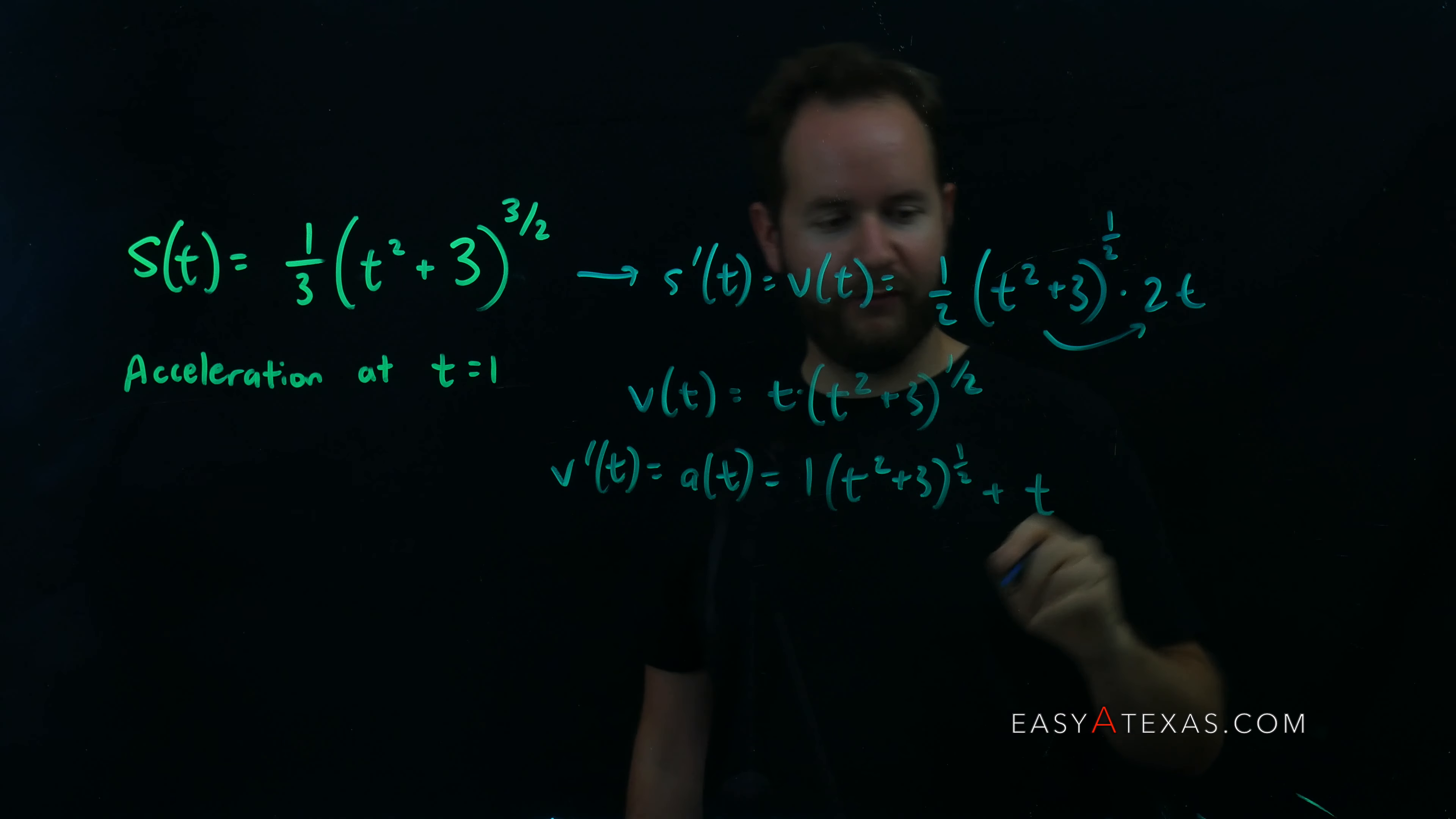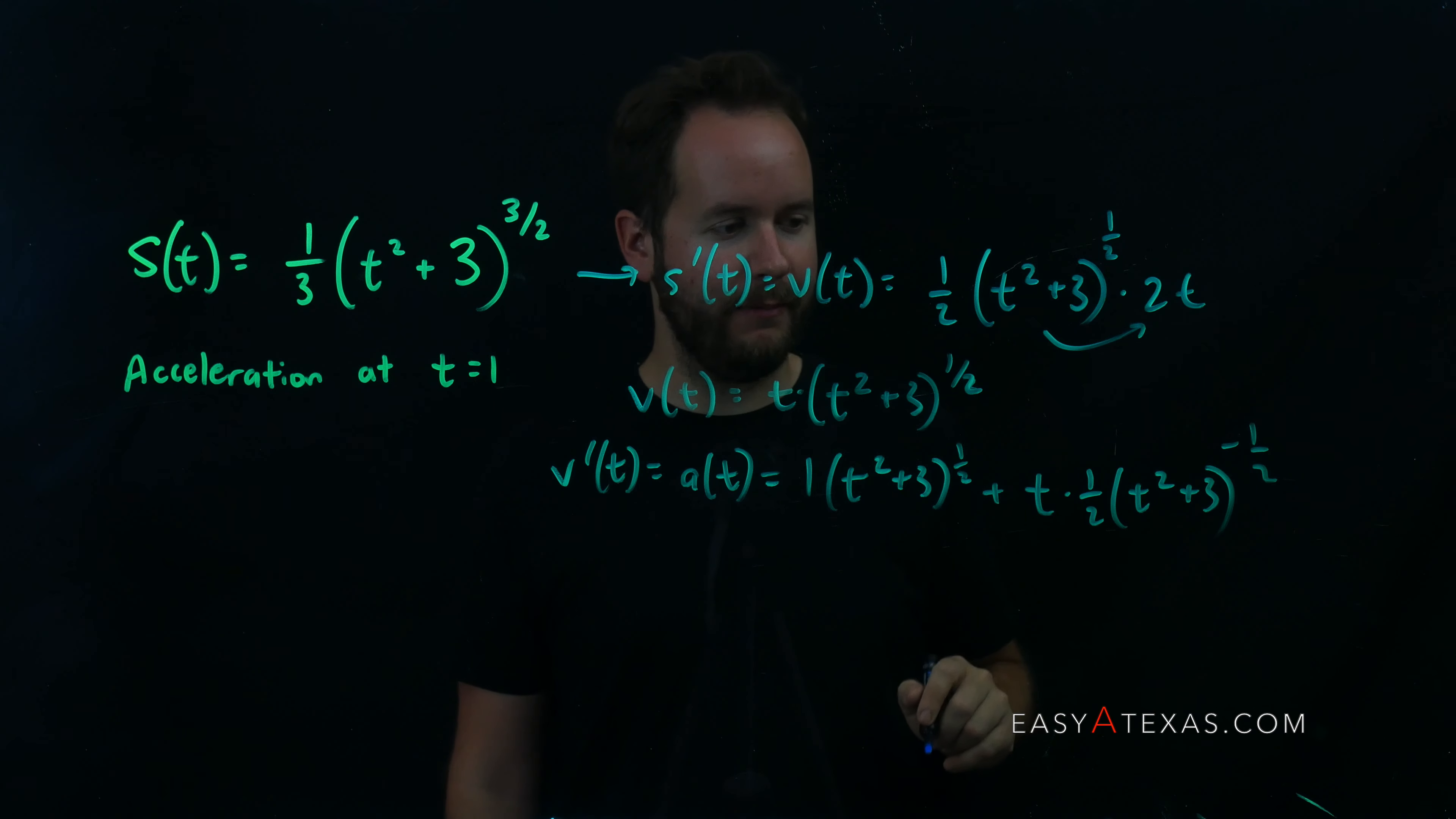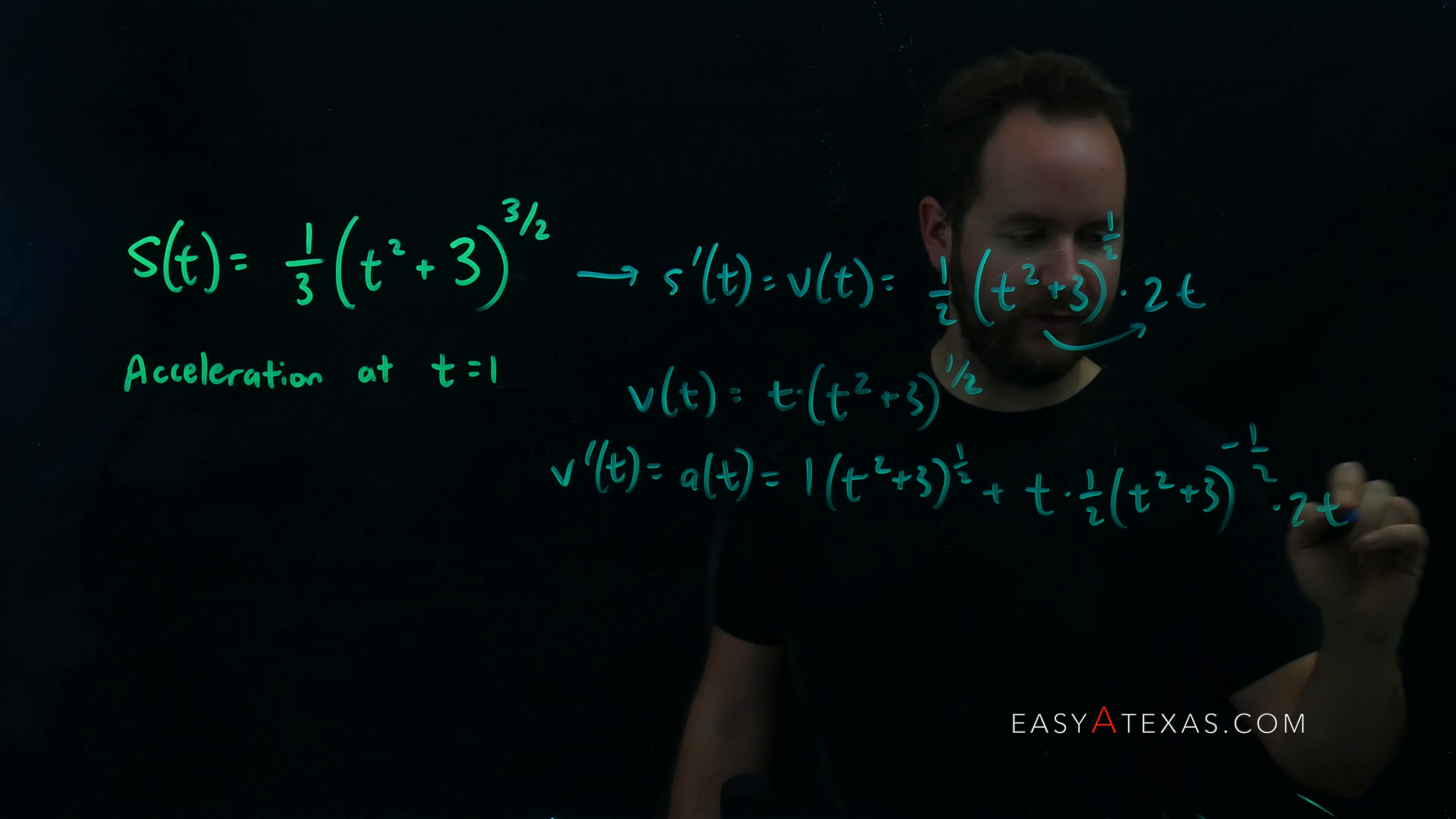The one half will come down in front, multiply by the t squared plus three, now to the power of negative one half. We have to subtract one from that power, and don't forget the chain rule is still in place. We take the derivative of that inside function here, t squared plus three's derivative is two t.